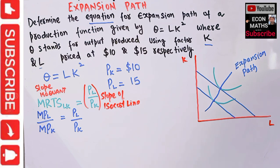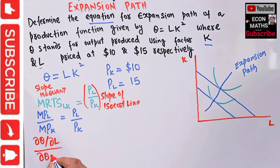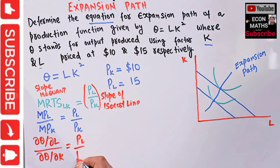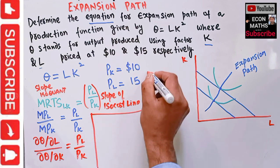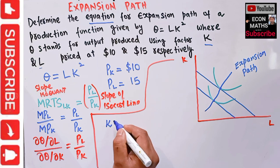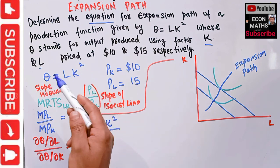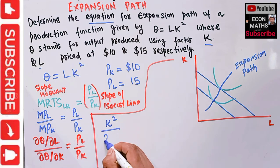The MPL is the partial derivative of the production function with respect to labor. The derivative of L is 1, so we are left with K², giving MPL = K². Similarly, the partial derivative with respect to capital gives the derivative of K² as 2K, so MPK = 2LK.